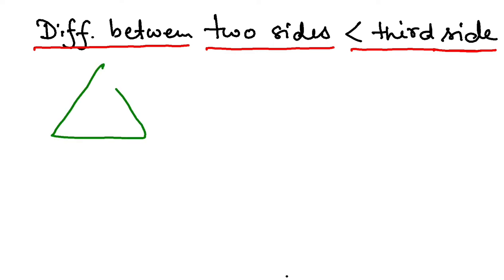If we have a triangle ABC, which are the three sides? It has AB, BC, and AC. The difference between any two sides, let's say AB minus BC, must be less than the third side.